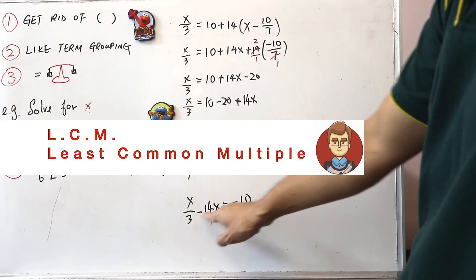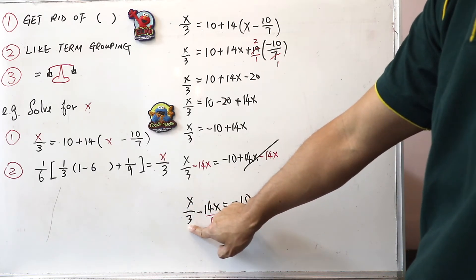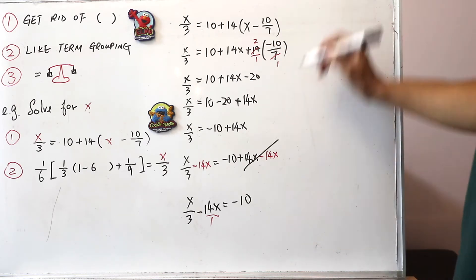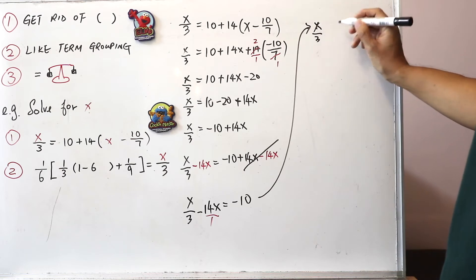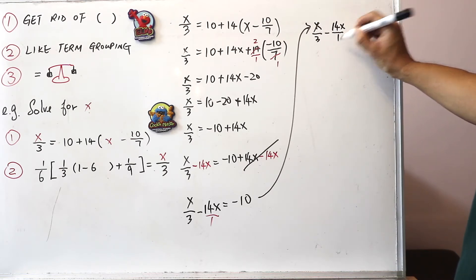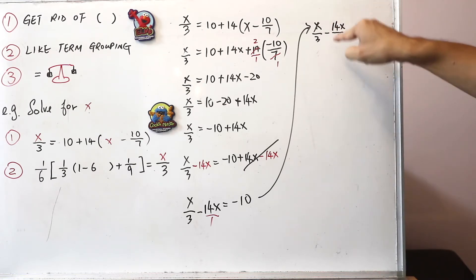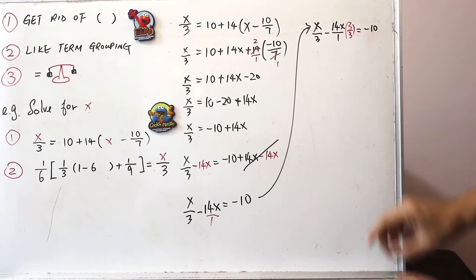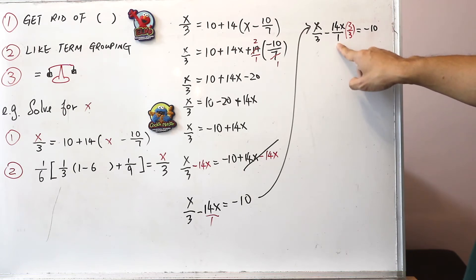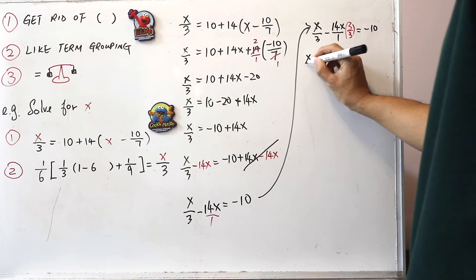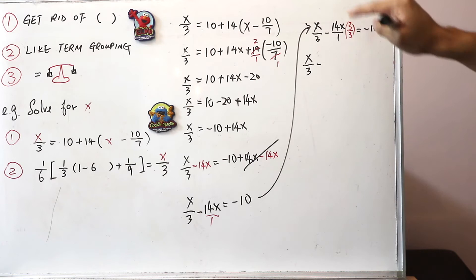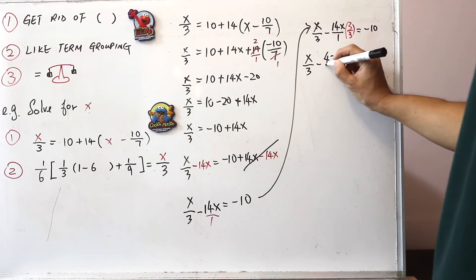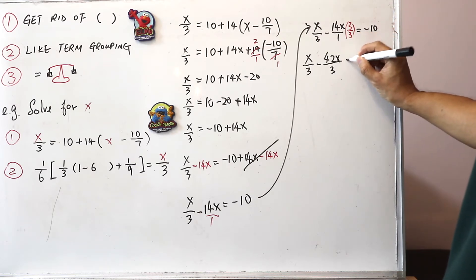To get the common denominator of 3, this term already has denominator 3. For the term with denominator 1, we multiply by 3 over 3, making the denominator 1 times 3 equals 3. So the next step becomes x over 3 minus 14x times 3 — that's 42x — all over 3, equals minus 10. Now both terms share a common denominator of 3.